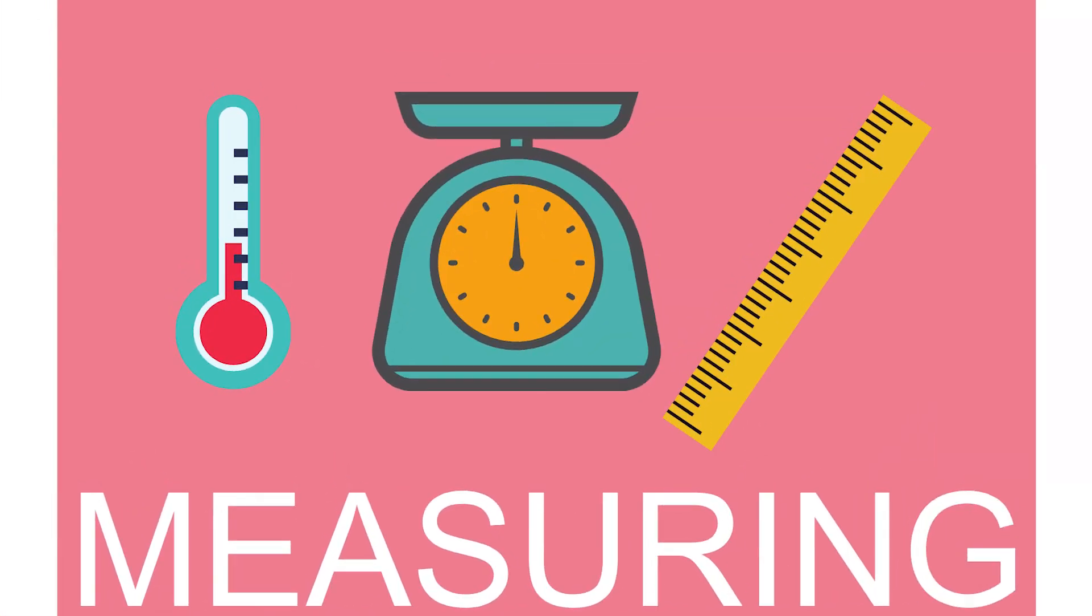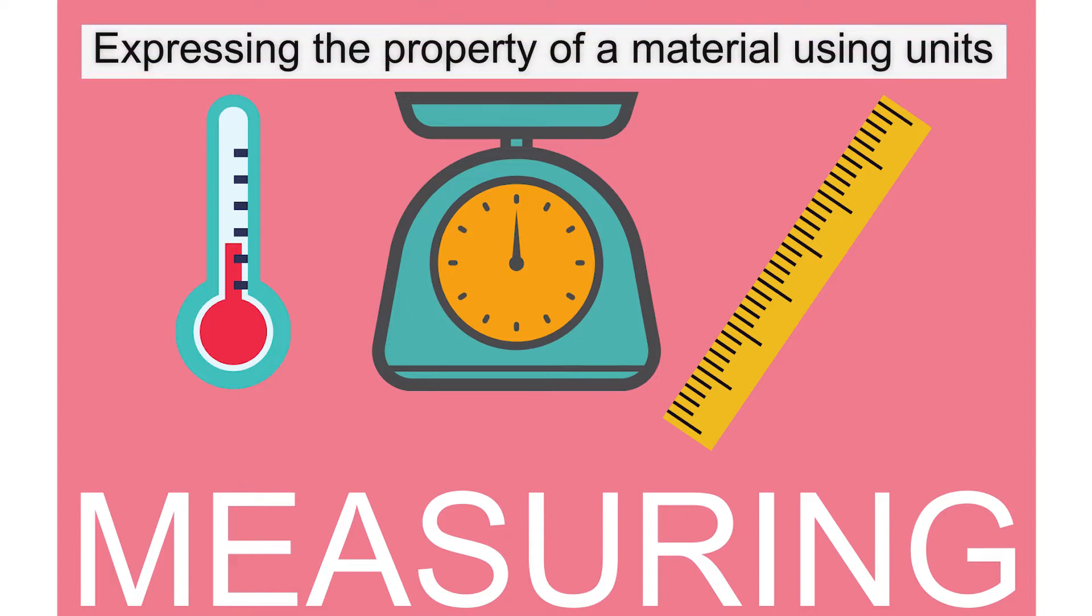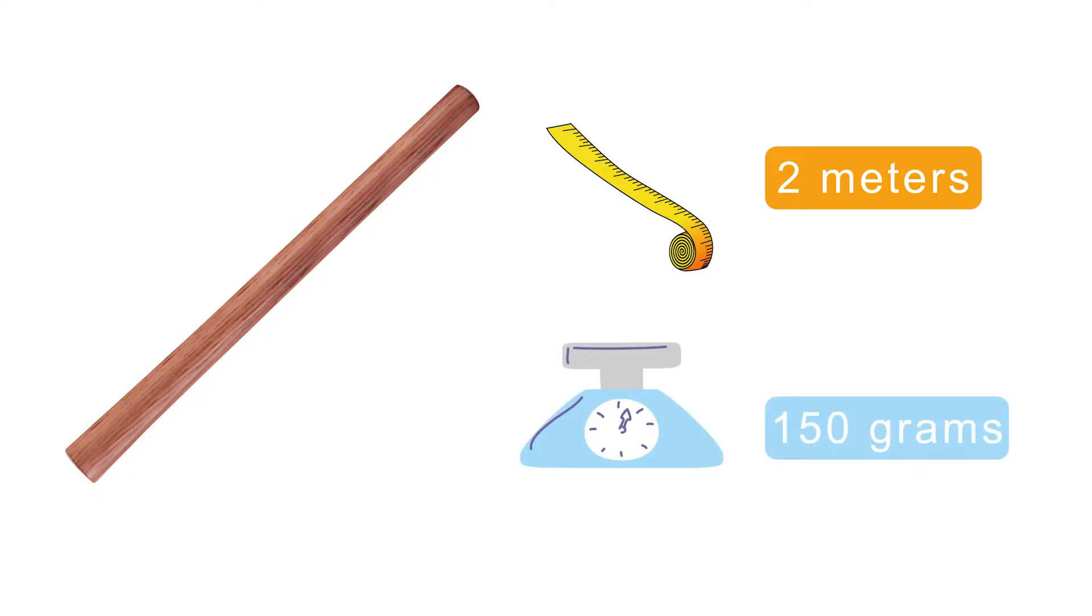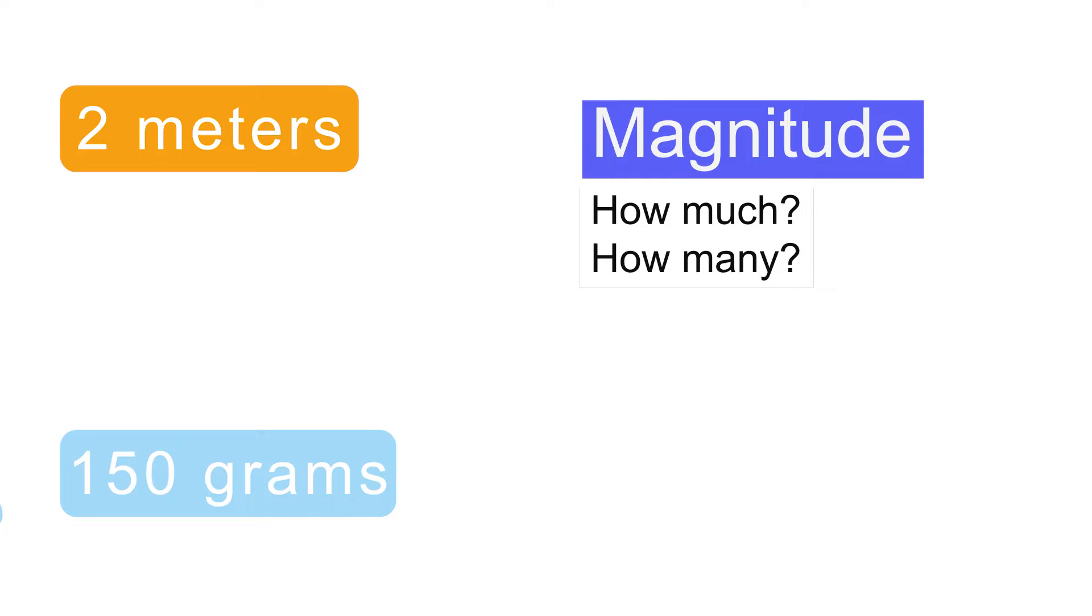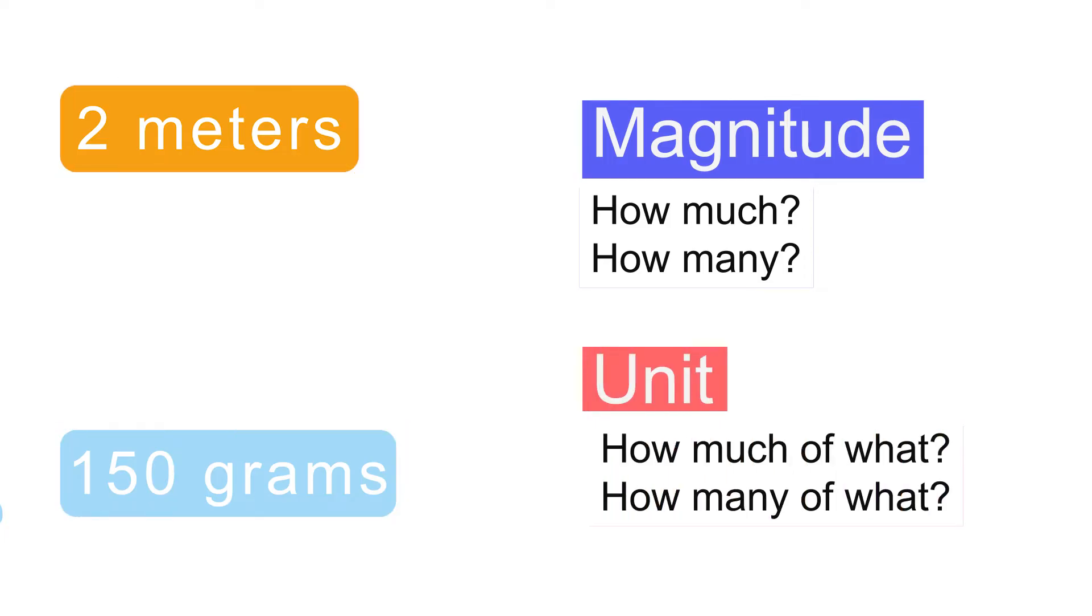Measuring is another skill which involves ascertaining a property of a material and expressing it in a defined unit. As an example, the length of a wooden stick can be expressed in a standard unit called meter, while the mass of the same wooden stick can be expressed in grams. A measurement typically contains two parts: one, a number or magnitude which tells how much or how many; and two, a unit or dimension which tells how much of what.